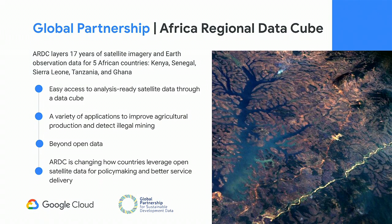For example, the partnership set up an SDG data collaborative with the UN Statistics Division to work towards better interoperability, and they host international events such as the Data for Development Festival. All the work they do attempts to reduce both the technical and political barriers to better data. One example is the Africa Regional DataCube: supporting five countries in East and West Africa to access and use 17 years of satellite data in order to improve their policymaking, connecting them with key partners such as NASA and the Group on Earth Observations so they can have analysis-ready data through an infrastructure called a DataCube.